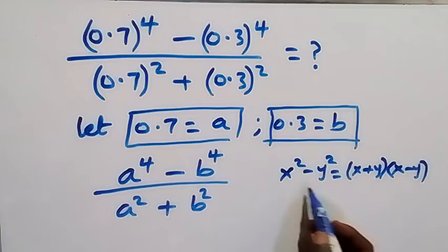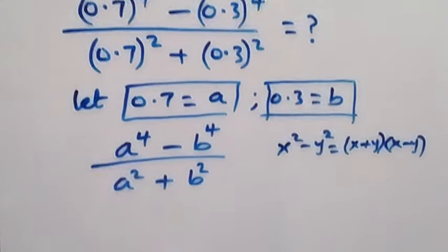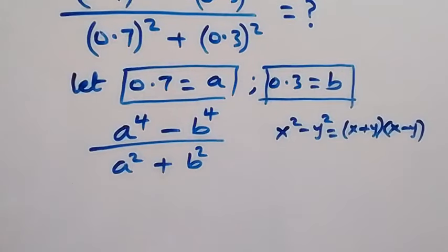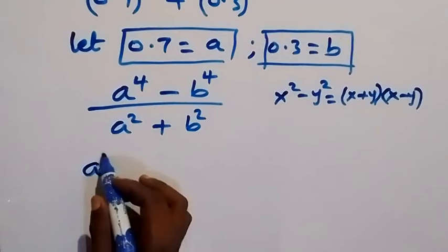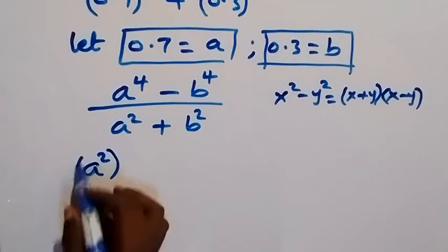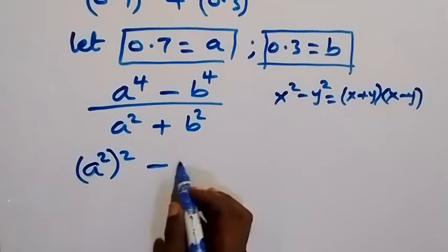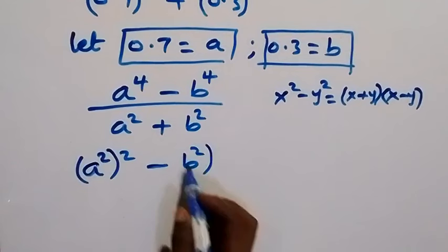So in this case, we can write what we have here now to be in form of squares, such that we are going to have a squared then squared minus b squared then squared.